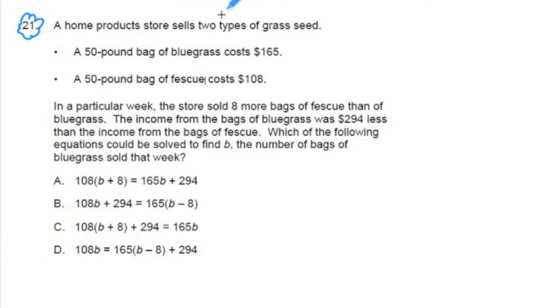A home product store sells two types of grass seed. A 50-pound bag of bluegrass costs $165. A 50-pound bag of fescue costs $108. In a particular week, the store sold eight more bags of fescue than of bluegrass. The income from the bags of bluegrass was $294 less than the income from the bags of fescue. Which of the following equations could be solved to find B, the number of bags of bluegrass sold that week?